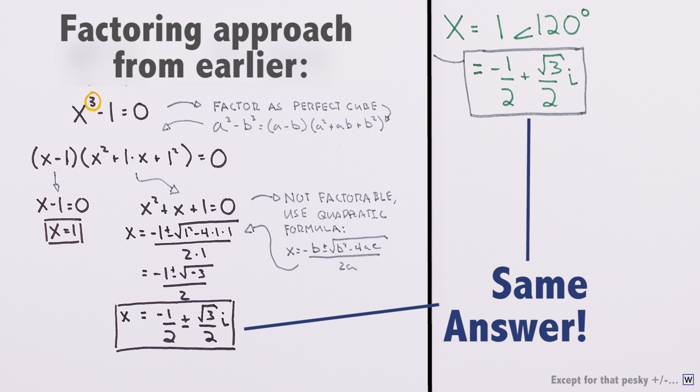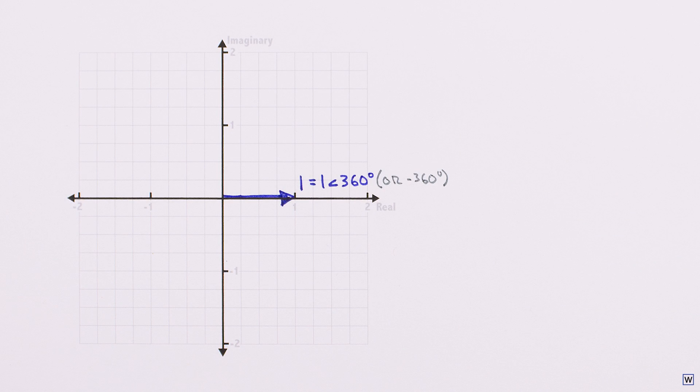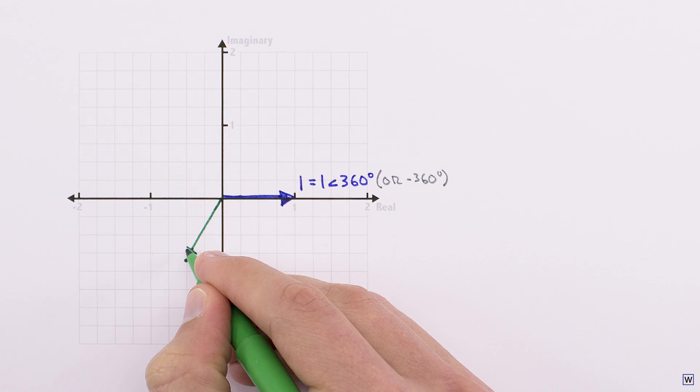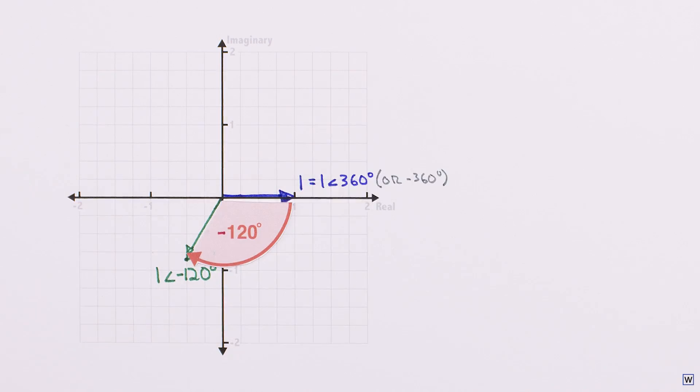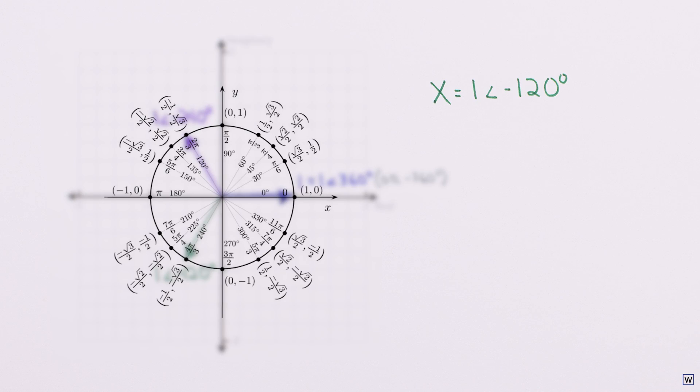Finally, we've only found 2 answers so far, and the fundamental theorem of algebra demands that we have 3. We find our missing answer going the other way around the circle. If we start at minus 120 and multiply our number together 3 times, we also land at the purely real number 1. So our missing answer is negative 1 half minus root 3 over 2 i.